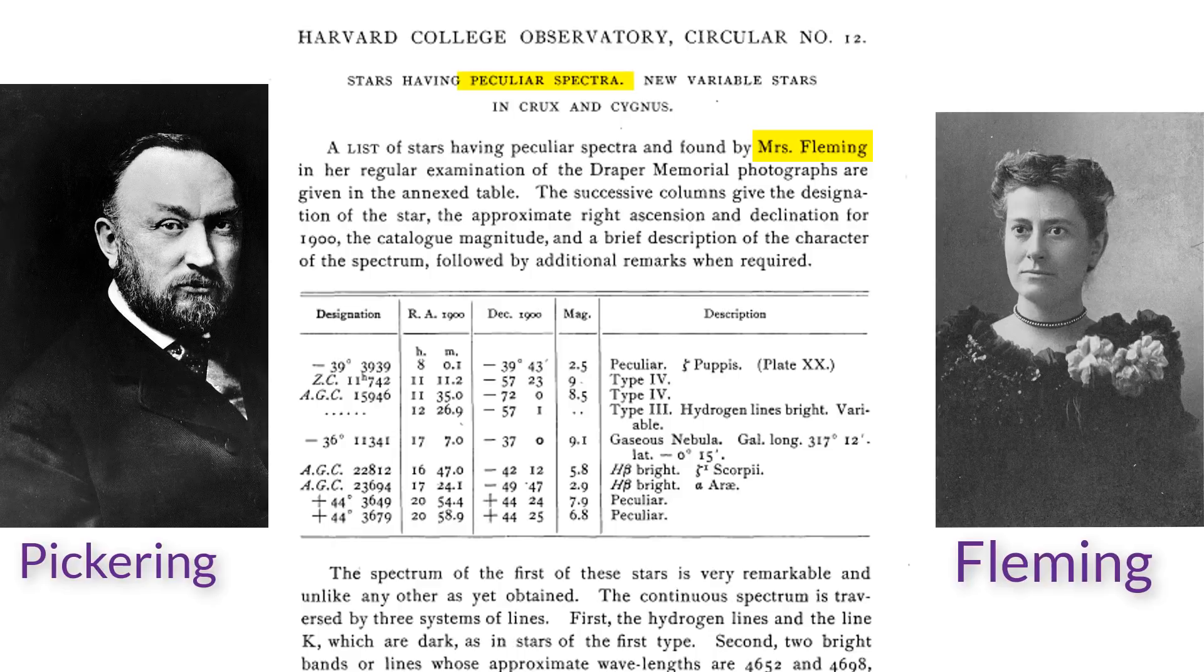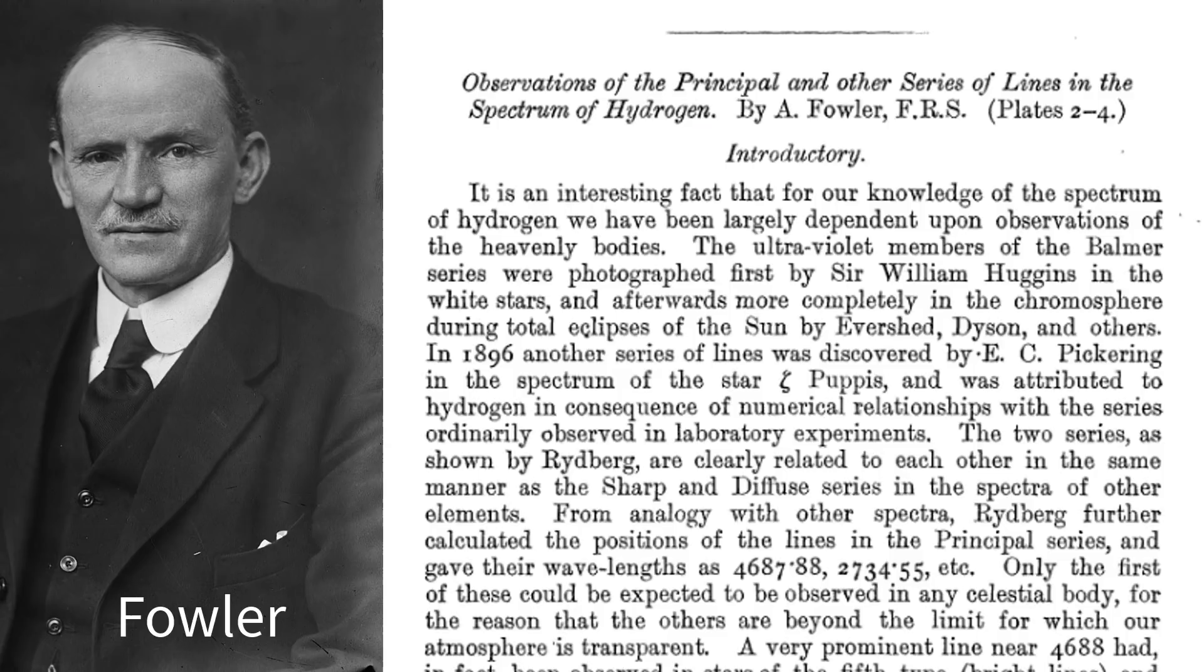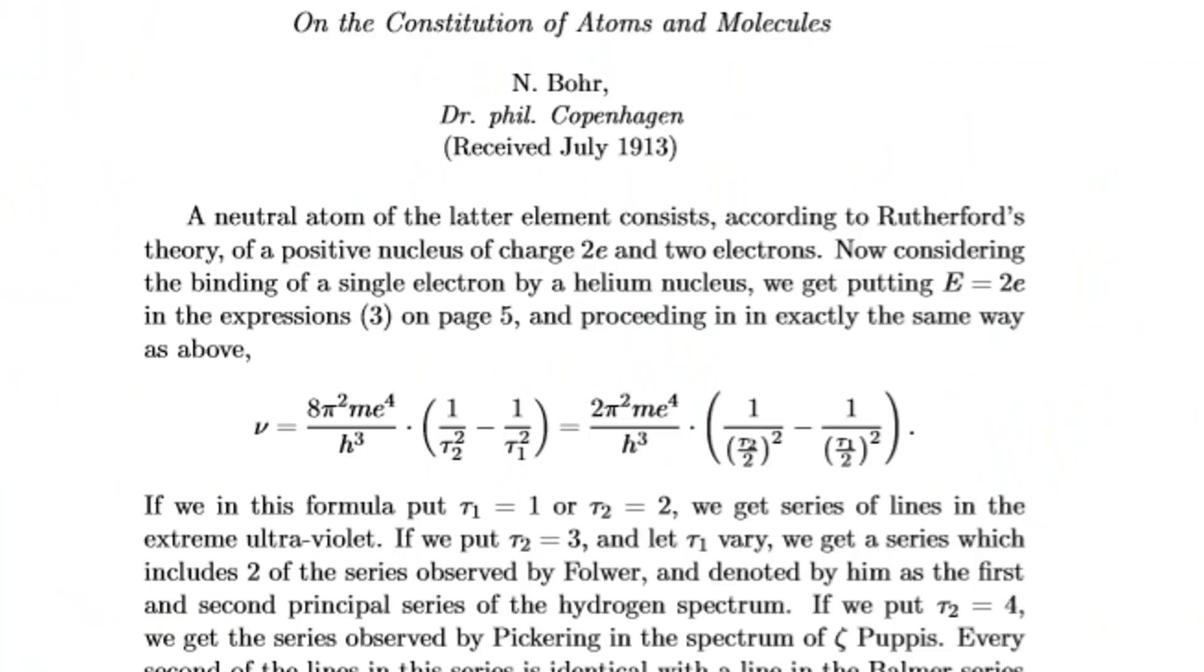But Bohr had another trick up his sleeve. He started reading about other spectra and found this very unusual spectra called the Pickering series, named after the boss of the woman who discovered it, Williamina Fleming, that discovered that the star had an unusual pattern that looked like a Balmer series with half integers. In 1912, the year before Bohr published his paper, a scientist named Alfred Fowler had reproduced these lines in the laboratory with a mixture of hydrogen and helium, which he attributed to hydrogen or something he called proto-hydrogen with half integers. Bohr thought maybe his model could solve the mystery. He realized that the Z² in the equation for the possible frequencies meant that the resulting frequencies from a helium plus atom—or a helium atom with two protons but only one electron—would look exactly like a hydrogen atom with half integers.